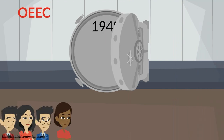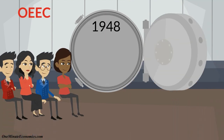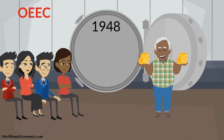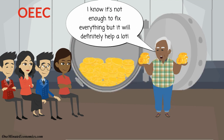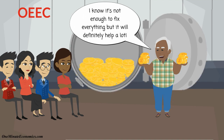To administer the mostly U.S.-provided financial aid, the Organization for European Economic Cooperation, or OEEC, was founded in 1948, and by 1951, the U.S. had contributed with roughly $130 billion in today's dollars. While definitely not enough to fix Europe's problems, it helped tremendously. Think of it as an important ingredient, not a miracle solution.